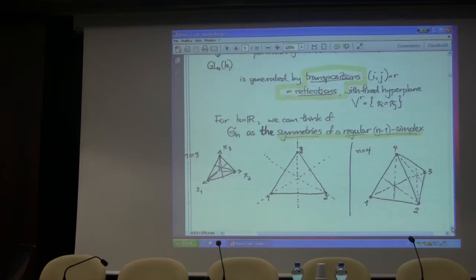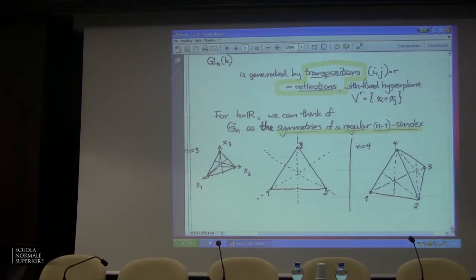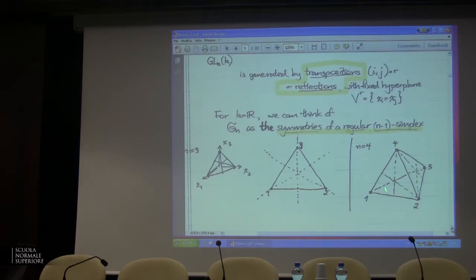You can also think of it as the symmetries of a regular polytope — the regular simplex — in which the vertices are numbered 1, 2 up to N. Here N is 3, so this is an equilateral triangle. The symmetric group acts by permuting the vertices, which extends to a linear symmetry of that regular simplex. When you look at all N-factorial symmetries, you get a group generated by reflections. For N equals 4, the symmetry hyperplanes for the various transpositions slice through and give a subdivision on the boundary.